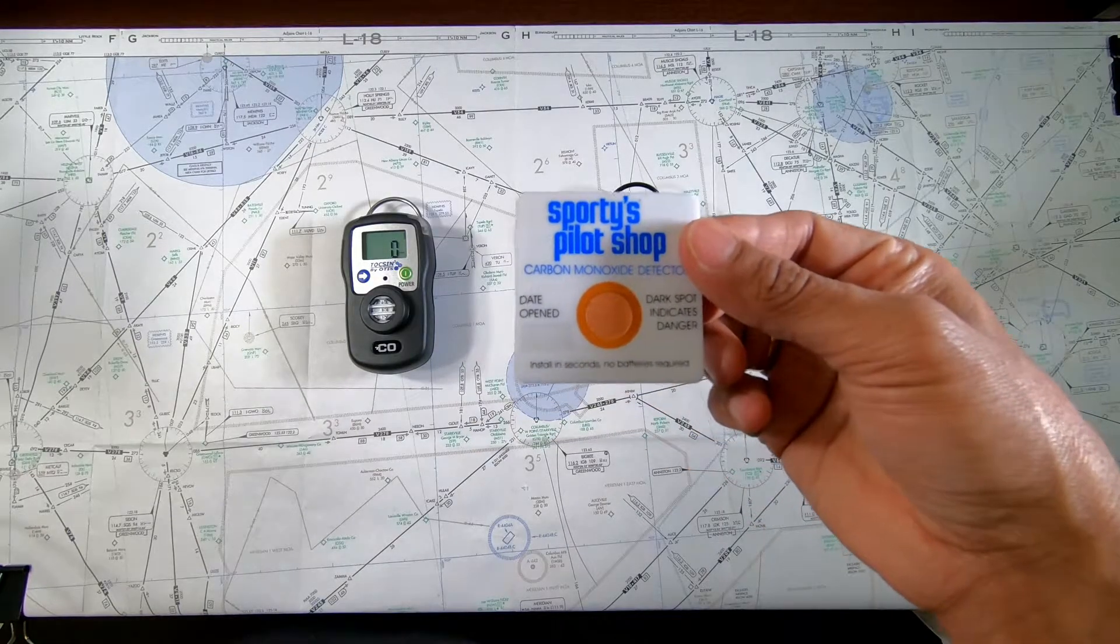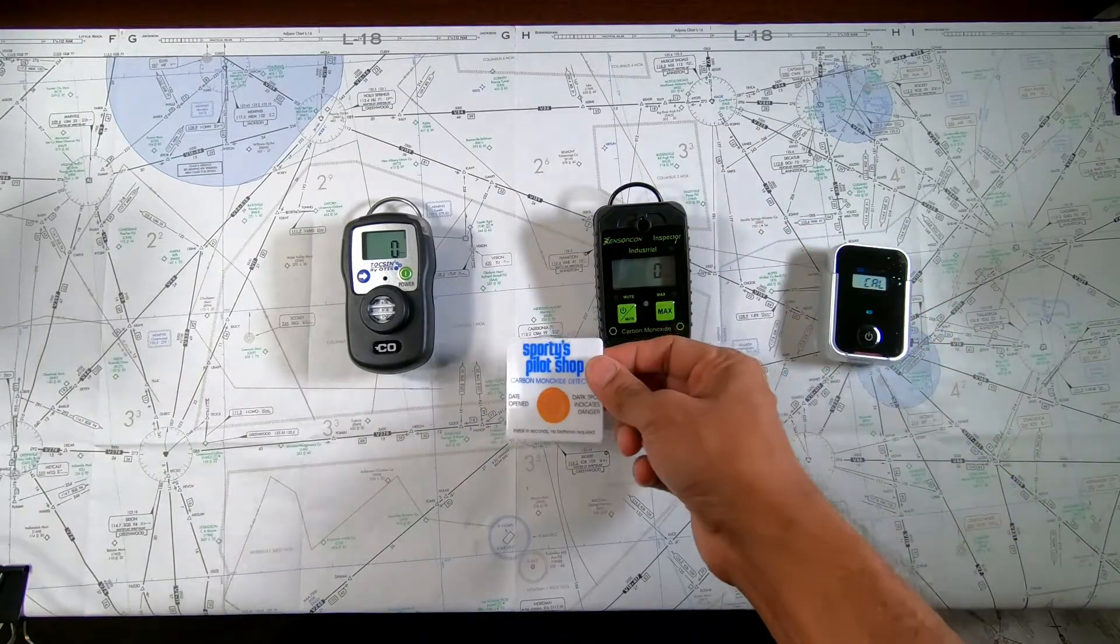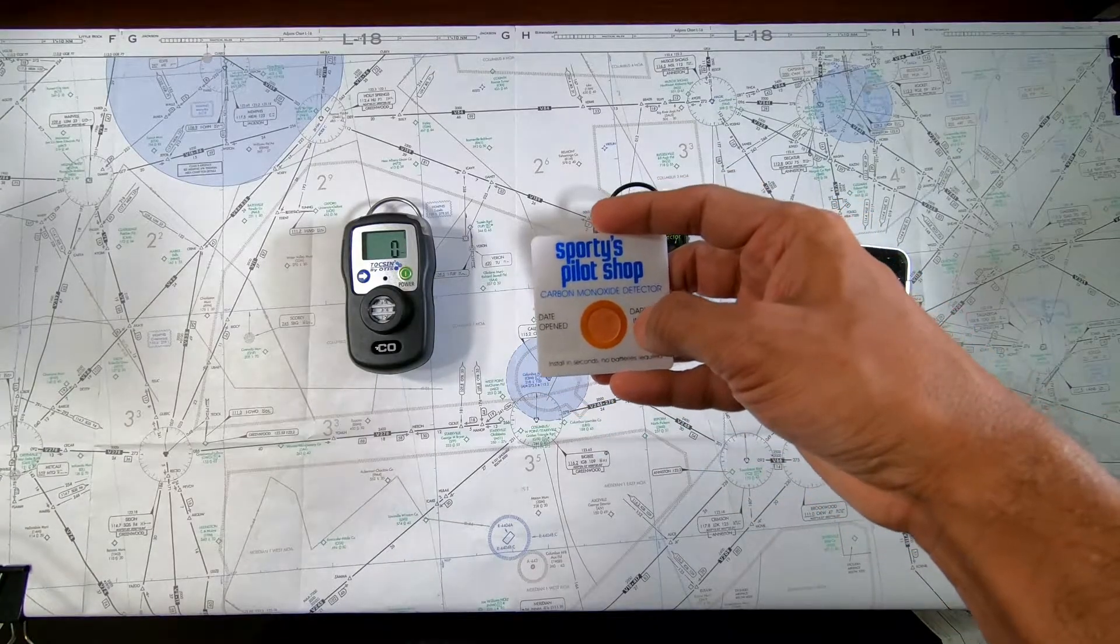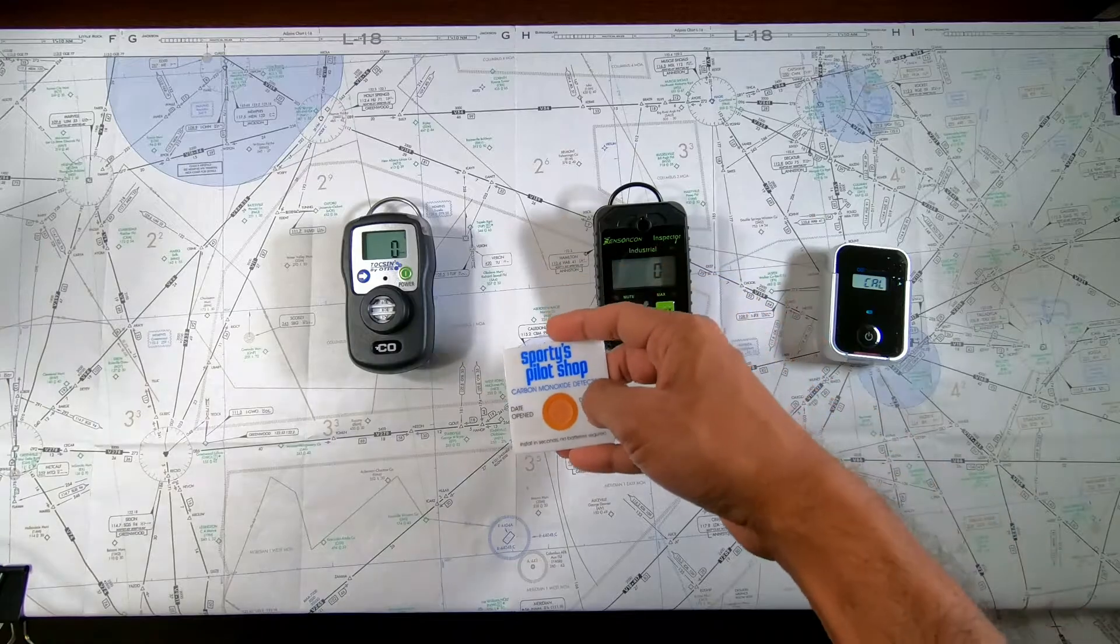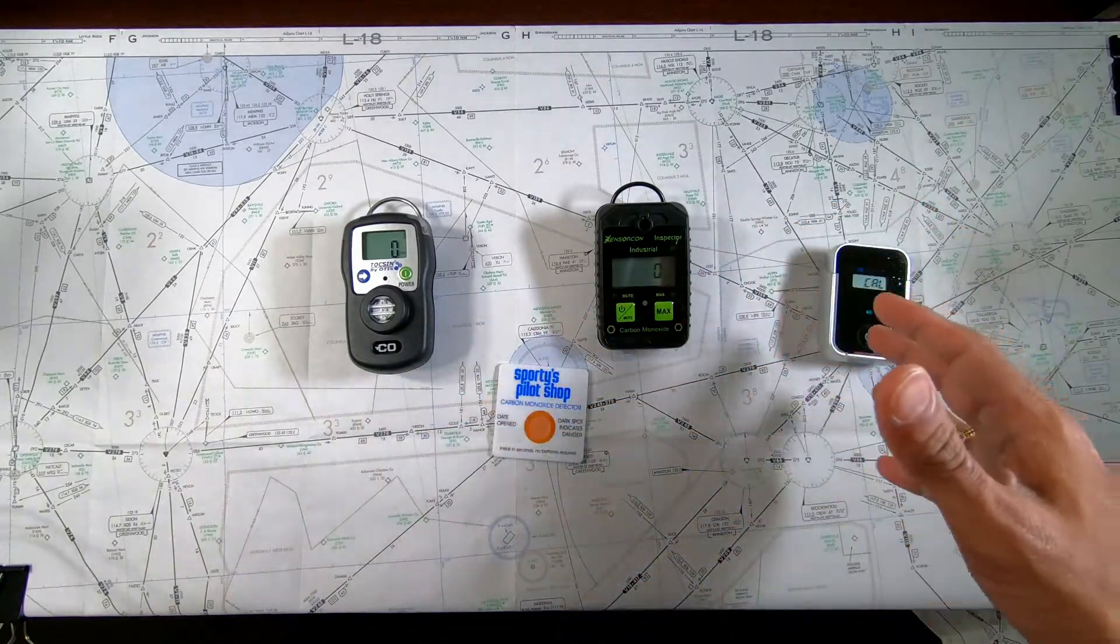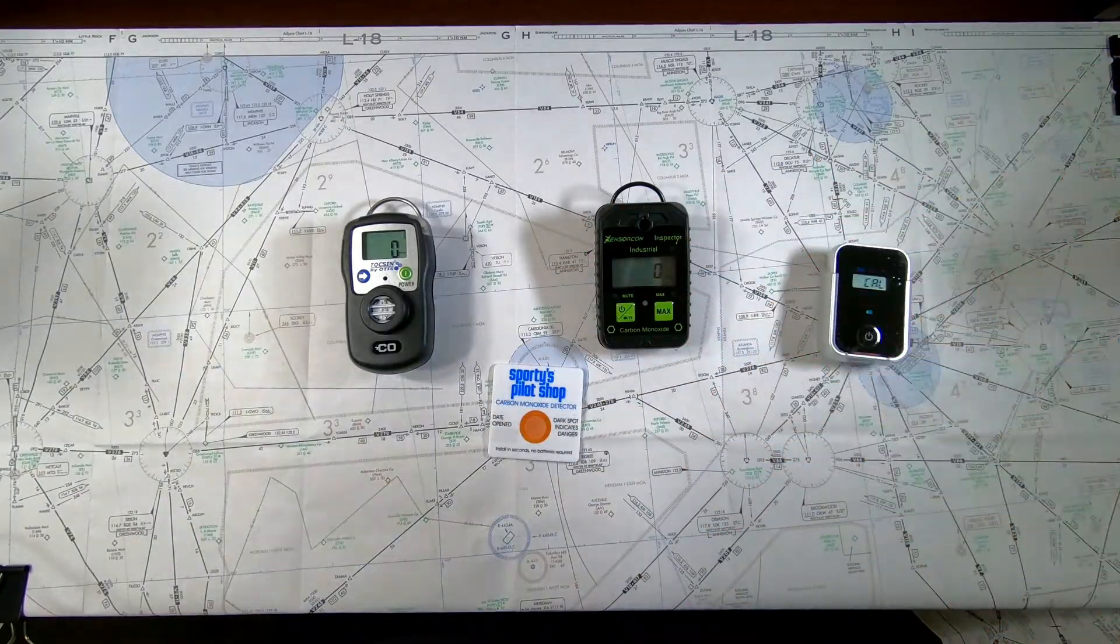I actually have this in the airplane that I fly, but I never know how well this works. According to the website, the orange spot in the middle will turn dark when carbon monoxide is detected. So my idea is to test all these three units and this patch side by side and find out which unit would work best for me.